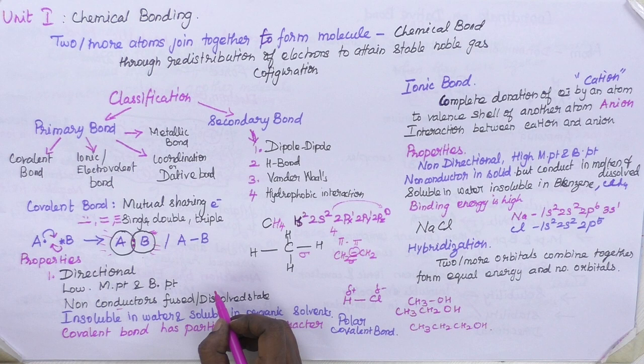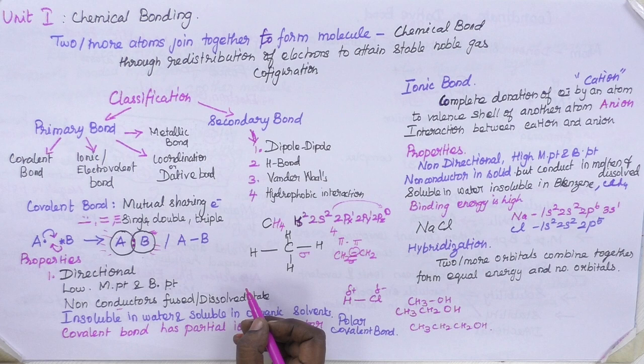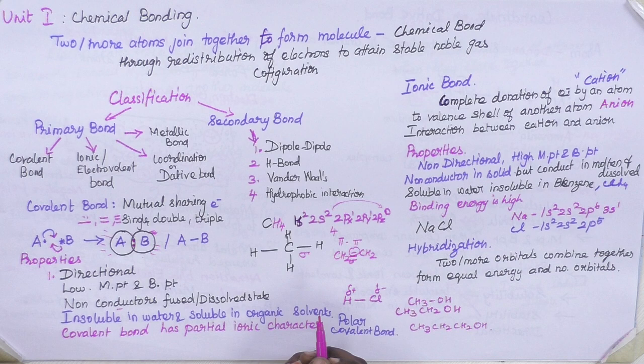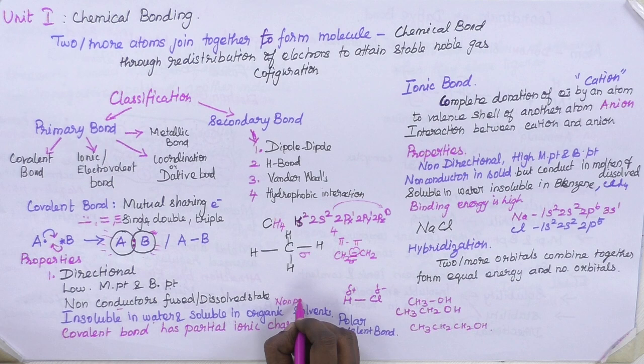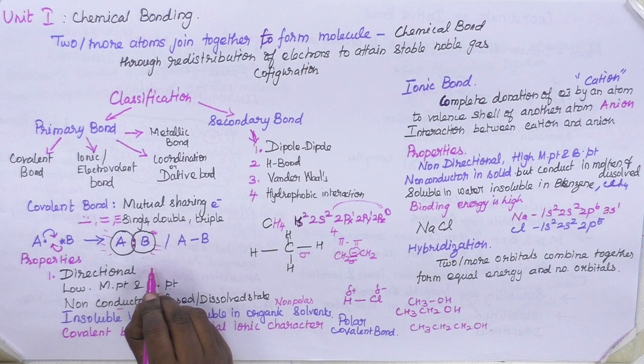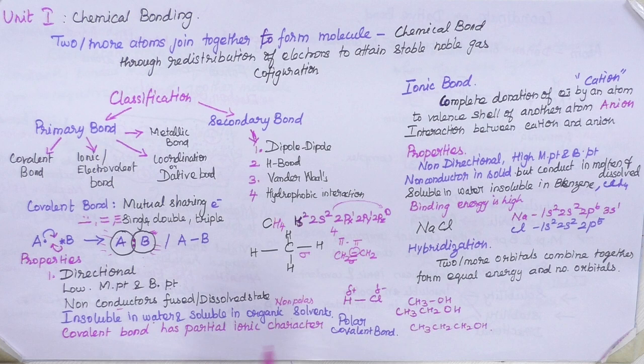Dissolved state means in the form of a solution. The solution formed by covalent molecules does not conduct electricity. Regarding solubility, covalent compounds are insoluble in water because water is polar in nature, but they are soluble in organic solvents, which are non-polar in nature. This shows that covalent molecules exist in a neutral state and are soluble only in non-polar solvents, not in polar solvents.